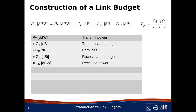Now we're ready to construct a link budget. All we're going to do is line up each of the terms from the previous equation in a column, just as if we were analyzing a financial transaction using a spreadsheet. The sum of the first five rows, being the factors on the right of the Friis equation, are added to obtain the received power. Now, at this point, it's useful to consider an example, so let's do that.